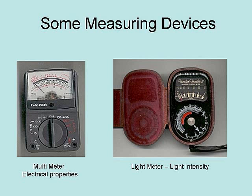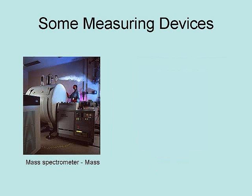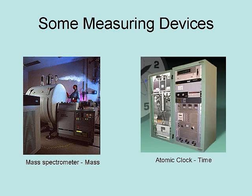This is a light meter, which measures light intensity. This is a mass spectrometer, which measures the mass of atoms. This is an atomic clock, which measures time to a billionth of a second.